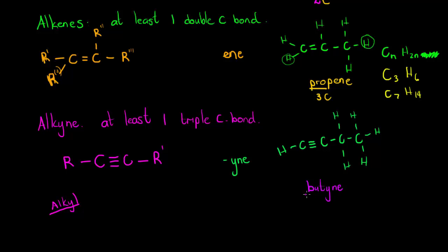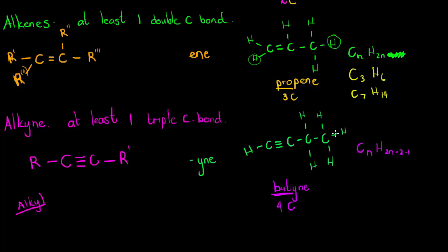For the general molecular formula of alkynes: each carbon would normally have two hydrogens, but we must subtract two for the first triple-bond carbon (which has none), subtract one more for the second, and add one for the end carbon (which has three instead of two). The plus one and minus one cancel, so for alkynes we subtract an additional two, giving CₙH₂ₙ₋₂.